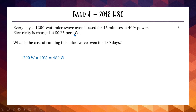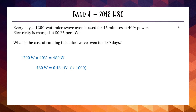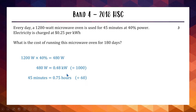We need kilowatt hours, so we convert watts to kilowatts by dividing by 1000. 480 divided by 1000 is 0.48 kilowatts. Now multiply by hours used: 45 minutes is three quarters of an hour, or 0.75 hours. So 0.48 kilowatts times 0.75 hours equals 0.36 kilowatt hours — that's how much energy is used each day the microwave runs for 45 minutes.